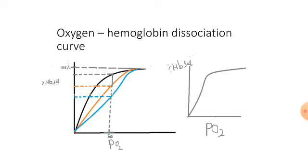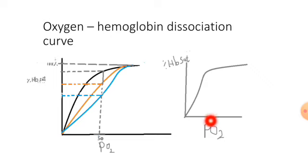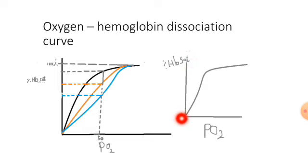Now let's move to the hemoglobin oxygen dissociation curve. This curve represents the relationship between the partial pressure of oxygen and the percentage of hemoglobin saturation with oxygen, or the affinity of hemoglobin for oxygen. As we said, the binding of hemoglobin for oxygen shows positive cooperativity, so you might expect a linear shape — but actually this curve has a sigmoid shape.